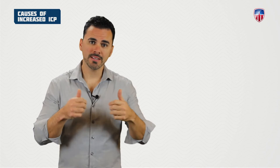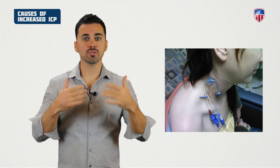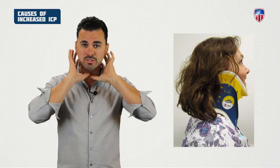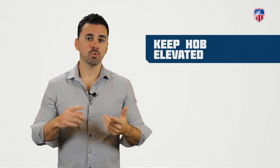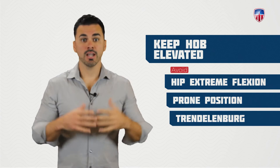Impaired venous drainage through the jugular veins or arterial blood flow through the carotid arteries can also increase ICP. Nurses should maintain neutral neck alignment, avoid IJ central lines, ensure trach ties and C-collars aren't too tight and are properly fitted, keep the head of bed elevated, and avoid extreme hip flexion, prone positioning, or Trendelenburg.